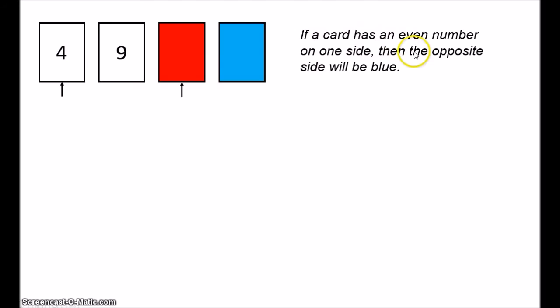The correct answer is that you need to turn over the four card and the red card. The rule says if a card has an even number on one side, the opposite side will be blue. Card one has the number four — we need to turn this over, because if the other side is not blue, the rule is broken. Card two has the number nine — it's an odd number, so not relevant to the rule. Card three (red) needs to be turned over — there might be an even number on the other side. Card four (blue) we don't need to turn over: the rule says all even-numbered cards must be blue, not that all blue cards must be even.